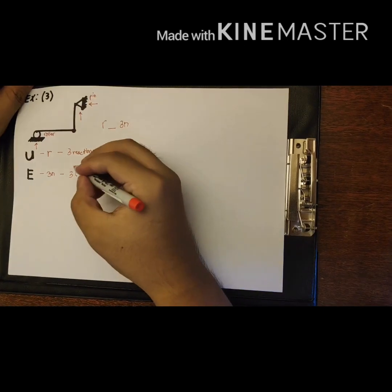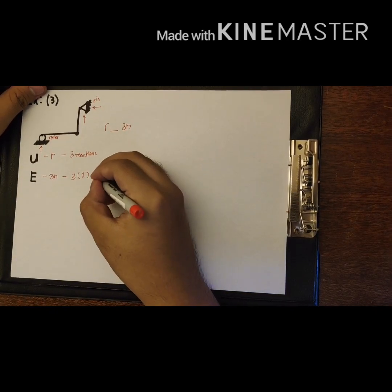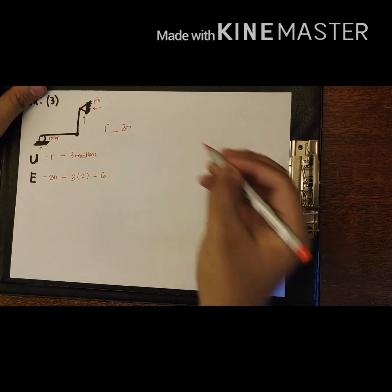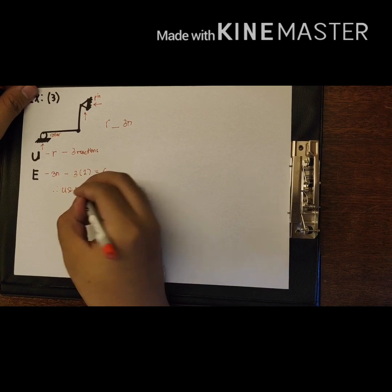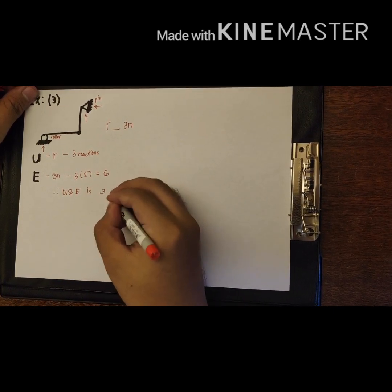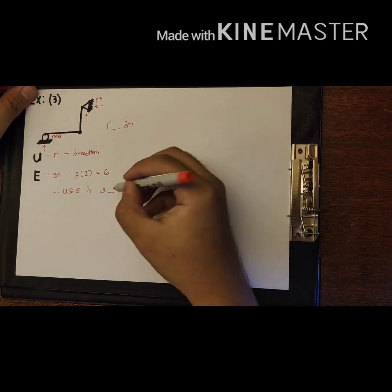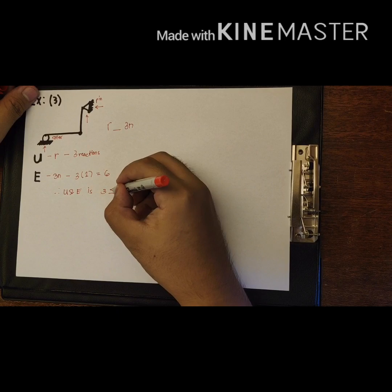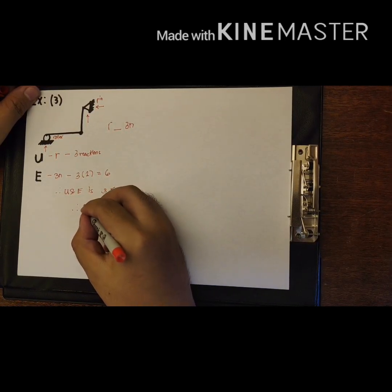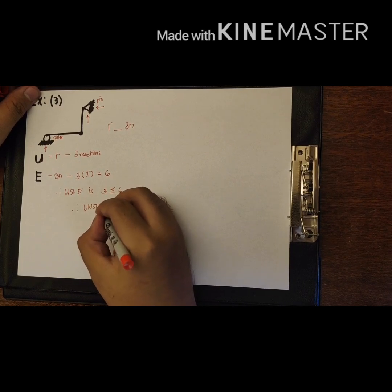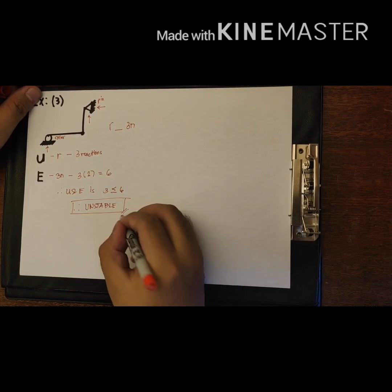Since N equals 2, we calculate 3 times 2 equals 6. Therefore, U and E in this problem are 3 blank 6, and we can clearly say that 3 is less than 6. Therefore, the final answer for this beam is unstable.